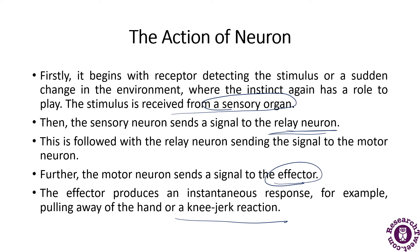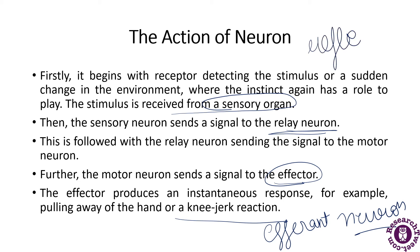From the above explanation, it can be clearly summarized that the afferent neuron receives the signals from the sensory organ and transmits the impulse via a dorsal nerve root into the central nervous system. The efferent neuron carries the signal from the CNS to the effector, and the stimulus forms a reflex arc. Reflex arc is a pathway that controls the reflex. In a reflex action, the signals do not route to the brain; instead, they are directed to the synapse in the spinal cord, and hence the reaction is instantaneous.